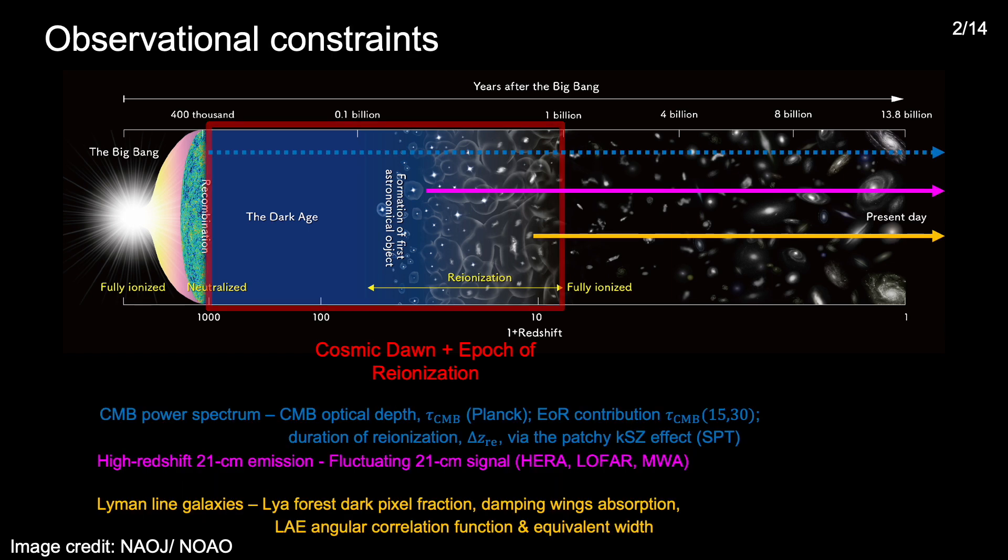Looking at observational probes that can be used to understand this period, in this presentation I'm going to focus on the CMB power spectrum and in particular constraints on the CMB optical depth and the high redshift contribution to the optical depth from Planck and an upper limit on the duration of reionization from SPT, high redshift 21 centimeter emission constraints from radio interferometers and constraints on the timing of reionization from Lyman line galaxy and quasar observations.